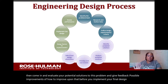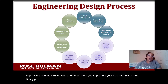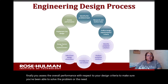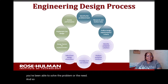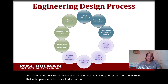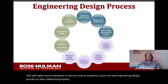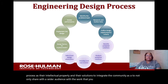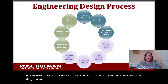Finally, you assess the overall performance with respect to your design criteria to make sure you've been able to solve the problem or need. This concludes today's video blog on using the engineering design process married with open source hardware — discussing how an academic could use that process and their intellectual property to integrate the community as a whole, to share with a wider audience, and to use the community to help identify design criteria, alternative solutions, ways to improve solutions, and to be involved in assessing and testing.